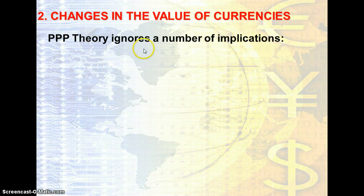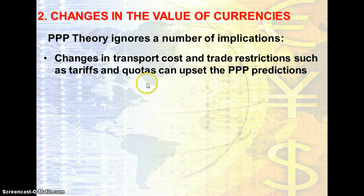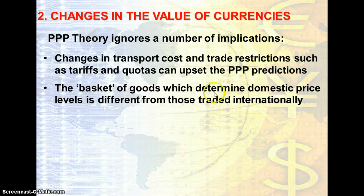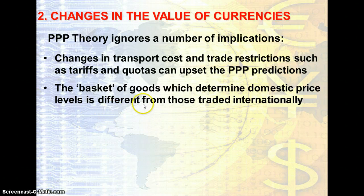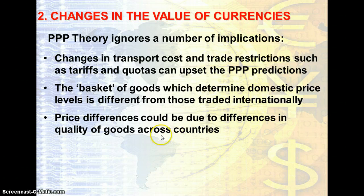However, the PPP theory ignores a number of implications. First, changes in transport costs and trade restrictions such as tariffs and quotas can upset the PPP prediction. For example, if British prices increase faster than prices in the US, but tariffs are also imposed to keep American goods out of the UK market, then the pound might not have to depreciate relative to the US dollar. Second, the basket of goods that determines the domestic price level is different from those traded internationally, so not all goods are internationally traded, meaning domestic inflation may have little bearing on the exchange rate.